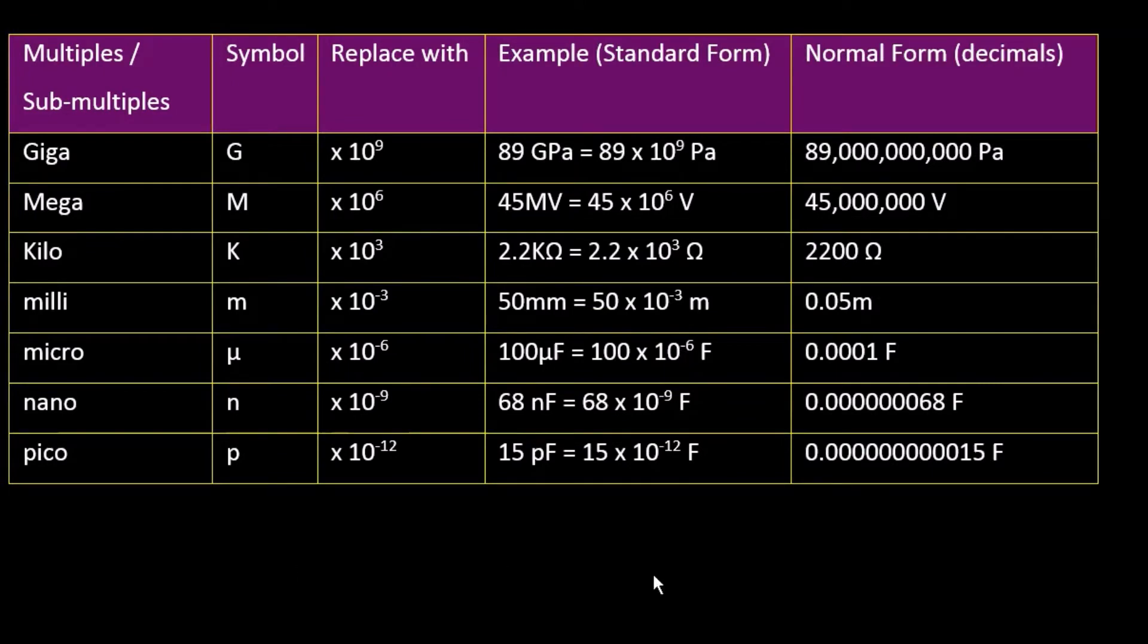If you write it out in full, it's going to come out with the number of zeros that is the power. So for instance, 89 Giga Pascals. That is 89 times 10 to power 9 Pascals. And that's 89 with 9 zeros on it.